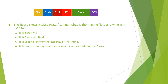The question reads: the figure shows a Cisco HDLC framing. What is the missing field and what is it used for? Option A: it is a type field. Option B: it is a checksum field. It is used to identify the integrity of the frame.